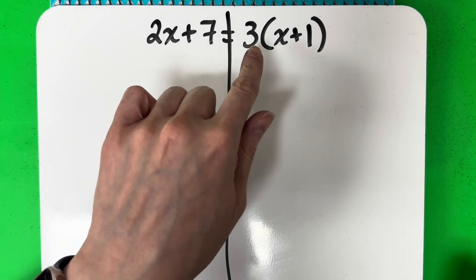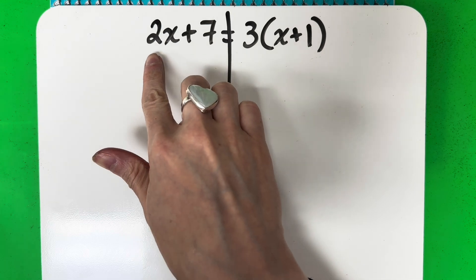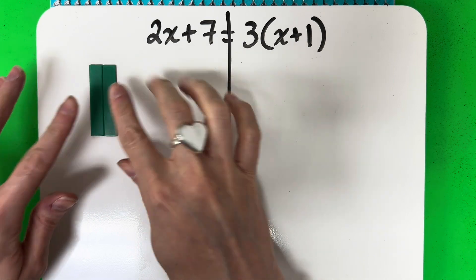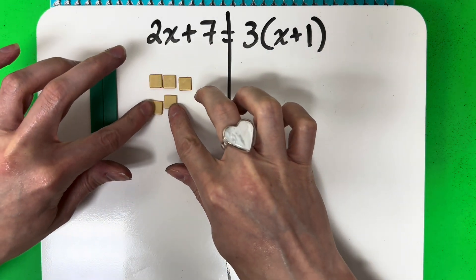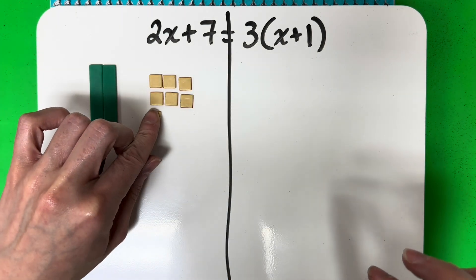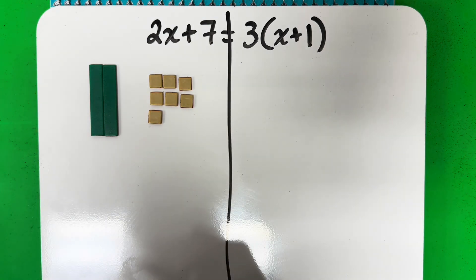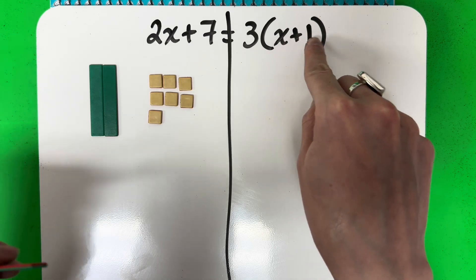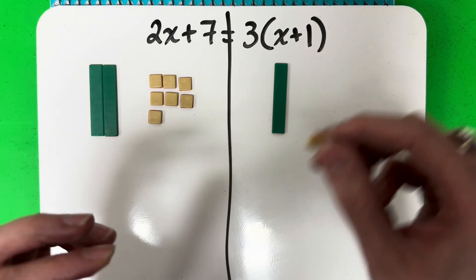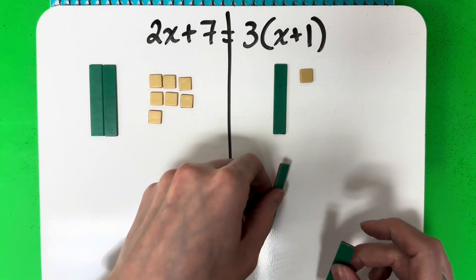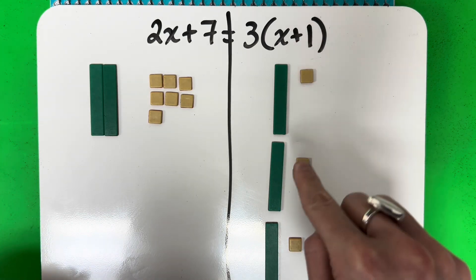Example 4: 2x plus 7 equals 3 times x plus 1. Remember to put a line on your equal sign. 2x has a variable, so I want the rectangles — it's positive 2. And positive 7 is a constant with no variable, so that's the small squares, positive, so yellow. Now, 3 times x plus 1 — what does that mean? This is not 3x. What you're going to do is model 3 of these: it's 3 of the quantity x plus 1. So x plus 1 is 1x positive plus 1 positive square. I want 3 of those — the exact same thing 3 times.